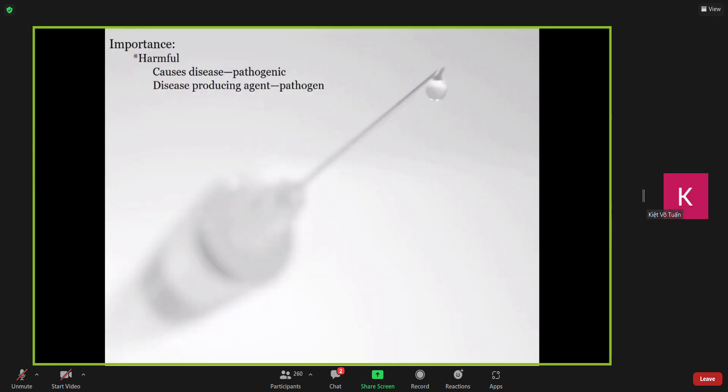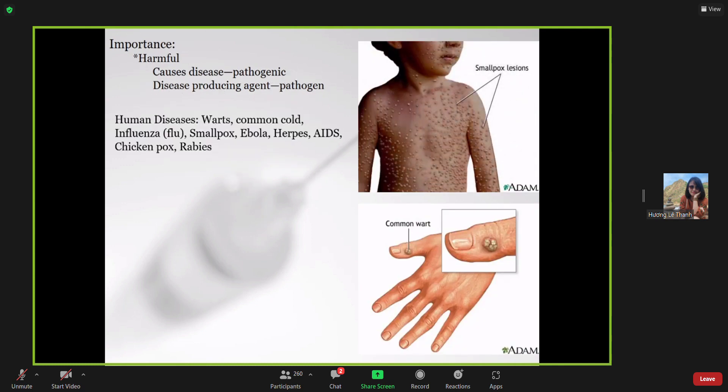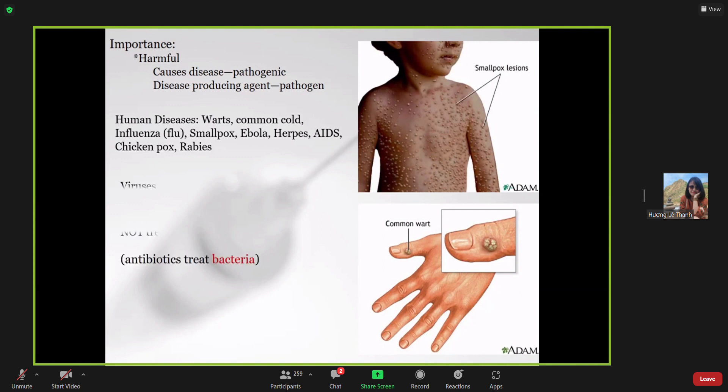Next, the importance of viruses. Most of the cases are harmful - they cause disease, and many pathogens are viruses. Human diseases: we have some common causes like influenza, smallpox, Ebola, herpes, AIDS, chickenpox, rabies, etc. So many diseases caused by viruses. The virus disrupts the body's normal equilibrium and balance. The virus can be prevented with vaccines but cannot be treated with antibiotics. Antibiotics, remember, only treat bacteria.